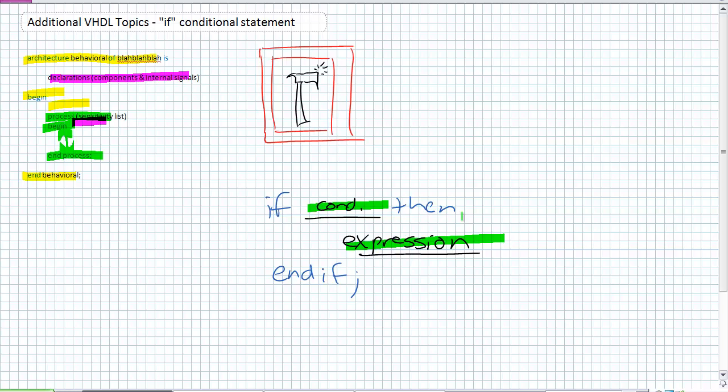There are other ways I could potentially do this if. What if there were two choices? If this condition is true, then do that expression. Else, evaluate another expression. So that's the second type of if. It would look like this. If this condition is true, then do expression 1. Else, expression 2. That's two choices and only two choices.